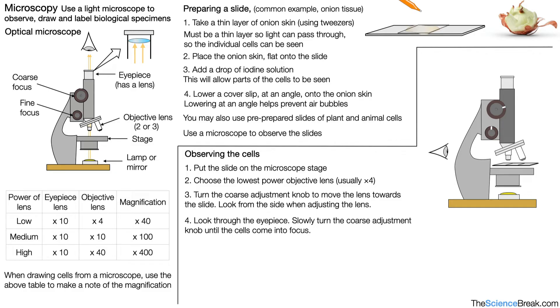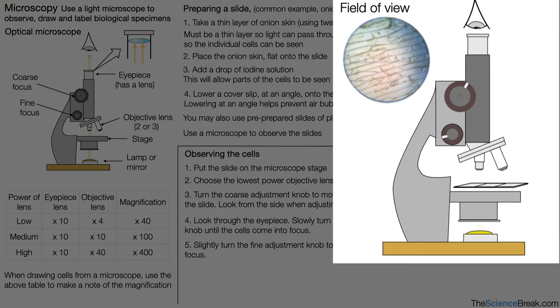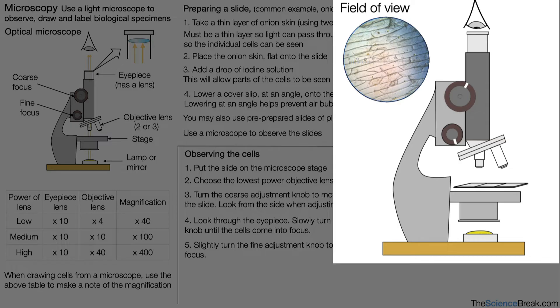We would then look through the eyepiece and slowly turn the coarse adjustment knob until the cells come into focus. So there's our eye looking through the eyepiece. There's what's called our field of view. We turn the coarse adjustment knob until the cells come into focus. We would then slightly turn the fine adjustment knob to bring the cells into clear focus. There's our fine adjustment knob being turned and now we can see the cells are much clearer to view.